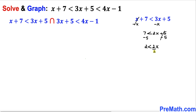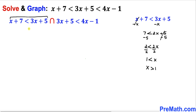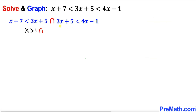Dividing both sides by 2, we get 1 is less than x, which can be rewritten as x is greater than 1. So we replace this first inequality with x is greater than 1, followed by the intersection symbol.